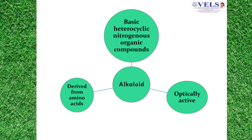Alkaloid is one of the secondary metabolites present in plants and also from animal sources. They are derived from the word 'alkali' which means basic in nature. Alkaloid is the heterocyclic nitrogen containing organic compound derived from amino acid, and it can be classified into 3 classes: true alkaloid, proto alkaloid and pseudo alkaloid.